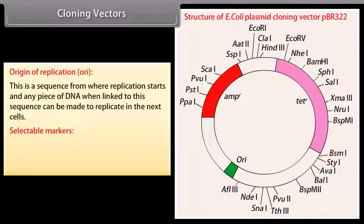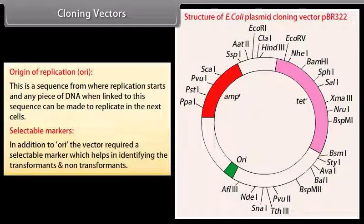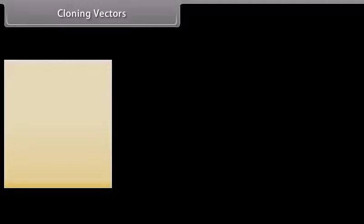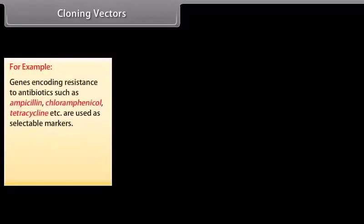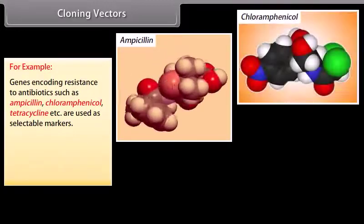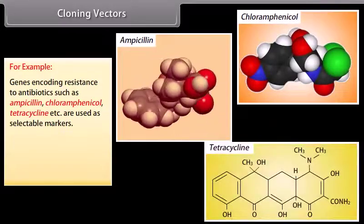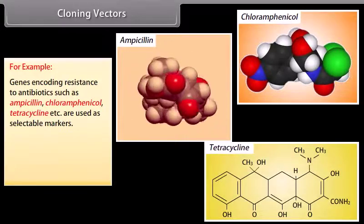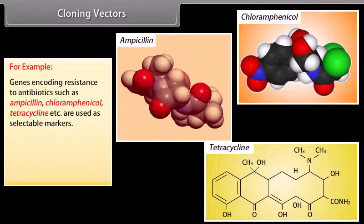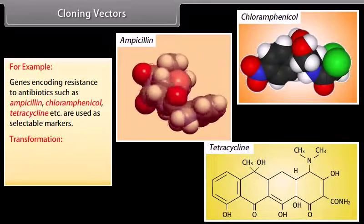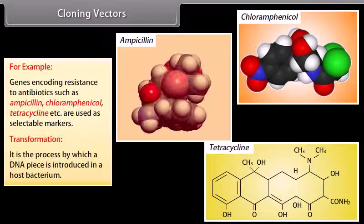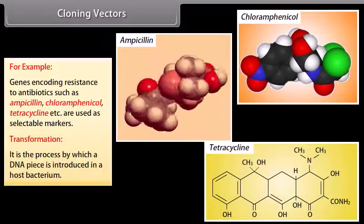Selectable markers: in addition to the origin of replication (ORI), the vector requires a selectable marker which helps in identifying the transformants and non-transformants. For example, genes encoding resistance to antibiotics such as ampicillin, chloramphenicol, tetracycline, etc. are used as selectable markers. Transformation is a process by which a DNA piece is introduced into a host bacterium.